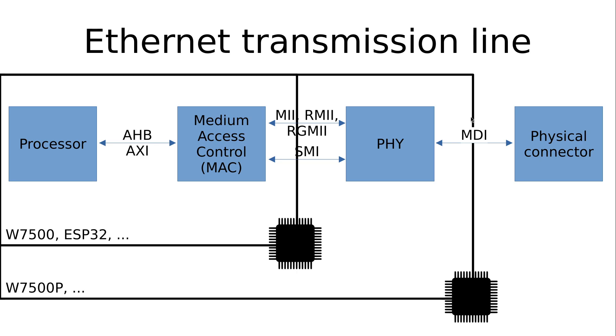And here is an example for an embedded system. On the Wiznet W7500 microcontroller which I will use in my series, the processor and the medium access control is on the chip. The interface between the processor and the MAC is AHB, the AHB bus. And then we have the MII signal routed out which is connected to the PHY and with the SMI signal.